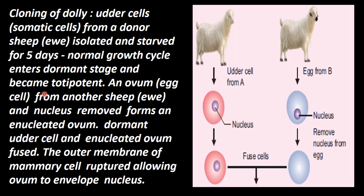And it became totipotent. Now the cell can, by division, produce and differentiate into any number of cell types of that organism.